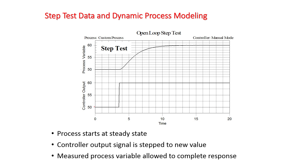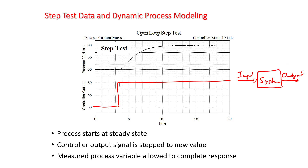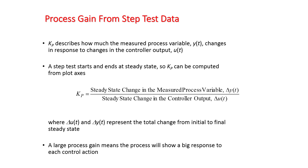In a step test, the controller output is the input to your system, and we observe the output. This is a common scenario where k_p is positive because we had a positive change in the input and a positive change in the output as well. We're going to go into how to fit k_p, tau_p, and theta_p. First, k_p is simply the delta steady-state change: delta output divided by delta input.